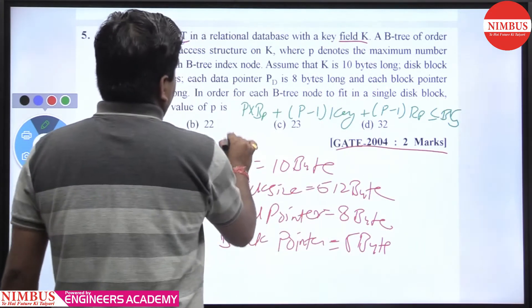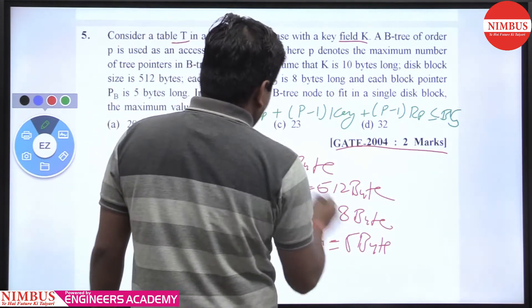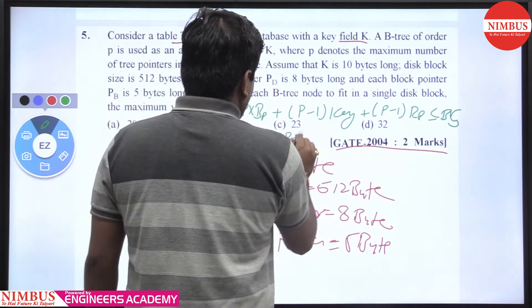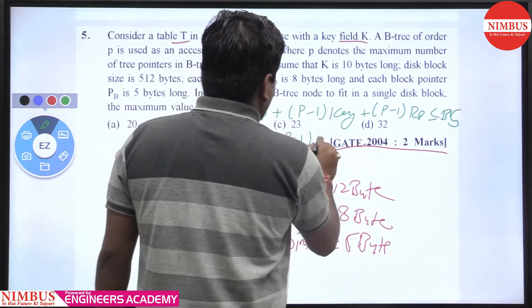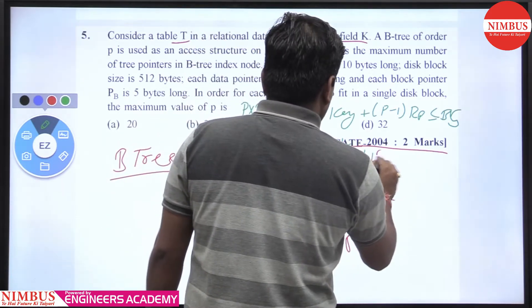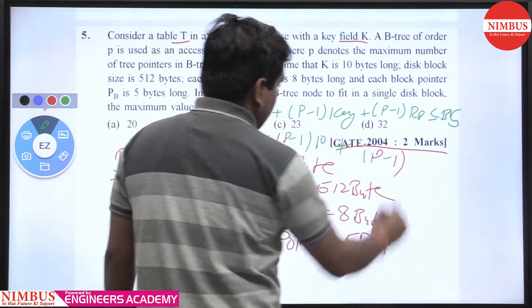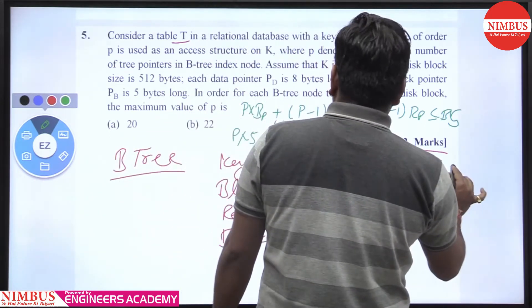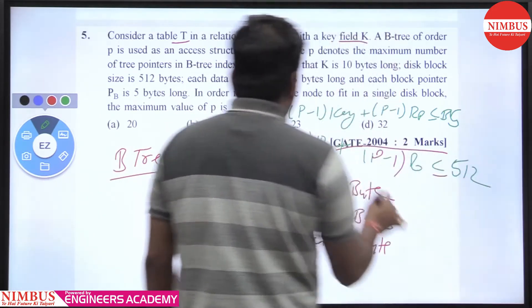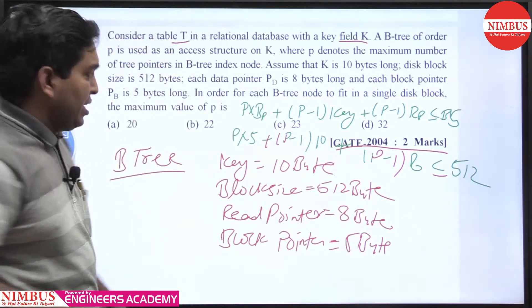So what is P? Block pointer size is given as 5 bytes, P minus 1 key size is 10 bytes, plus P minus 1 record pointer size is 8 bytes, less than or equal to 512 bytes. Then we will solve this equation and we are getting the answer.